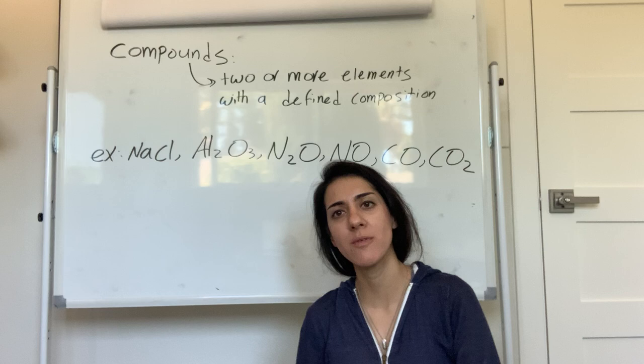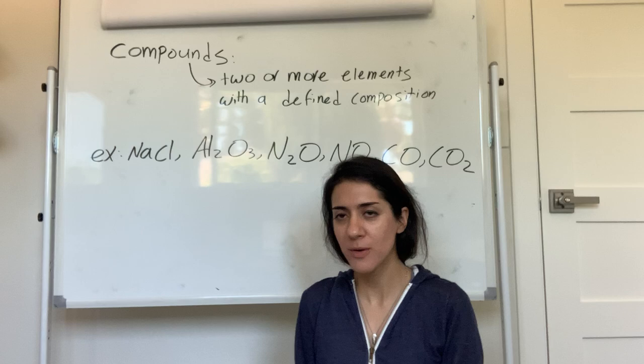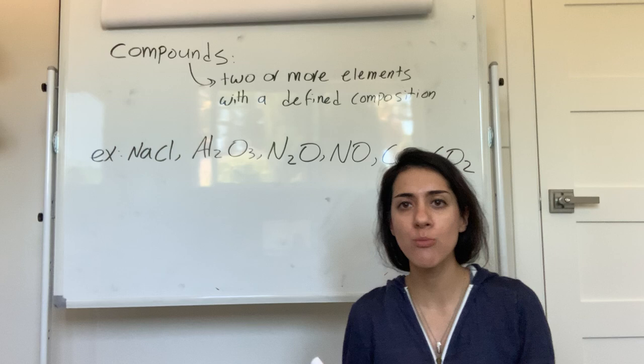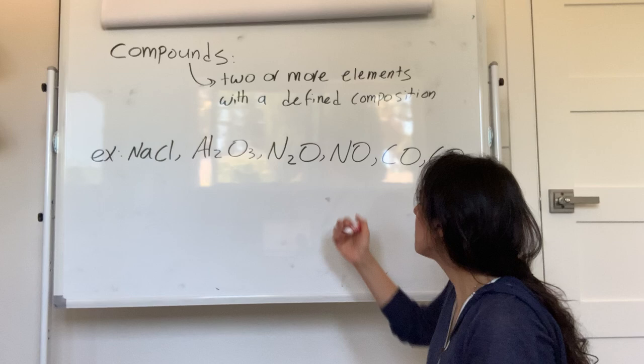Alright class, this chapter we're going to talk about compounds and we're going to go over how to name different compounds. Before we talk about compounds, let's go over what a compound is. A compound is usually composed of two or more elements with a defined composition. If you have two or more elements with a defined composition, you have a compound.